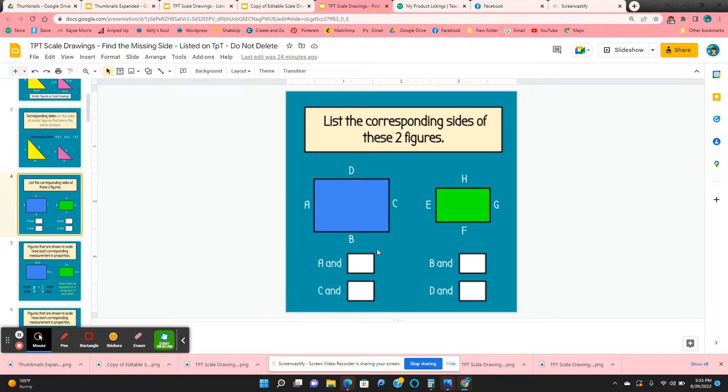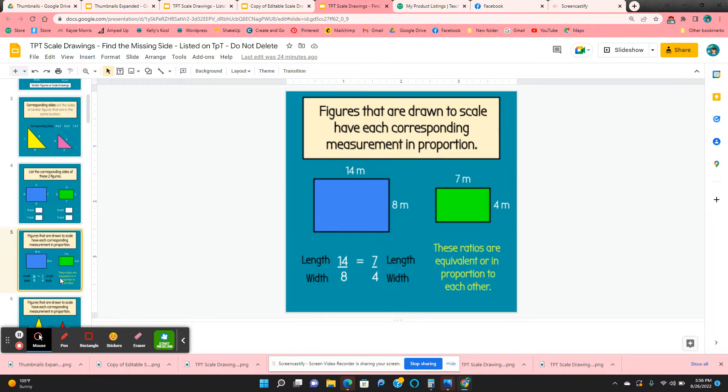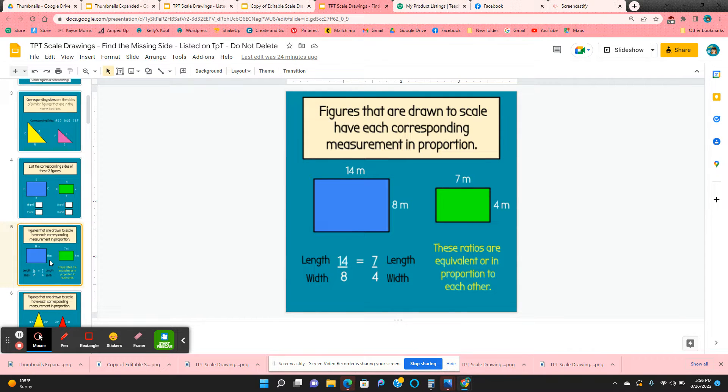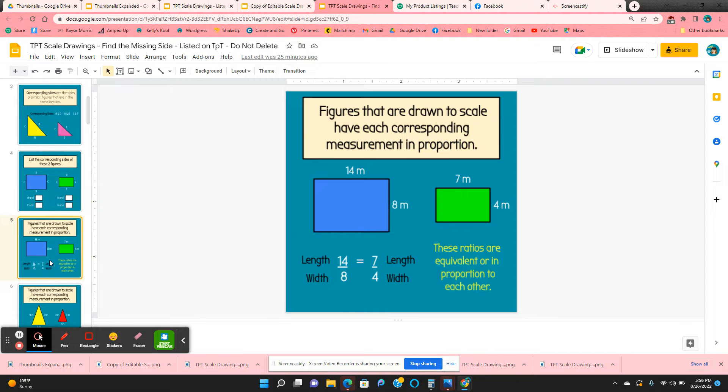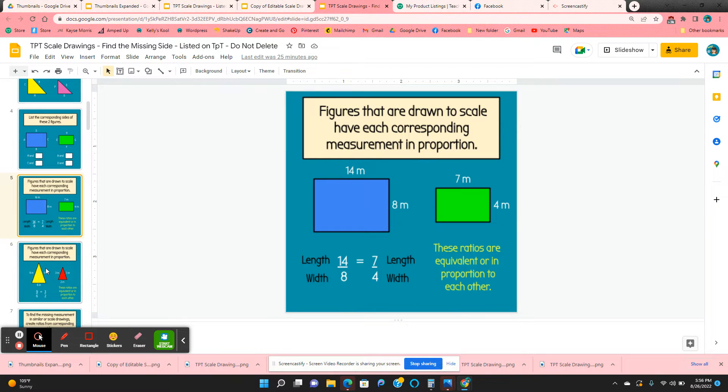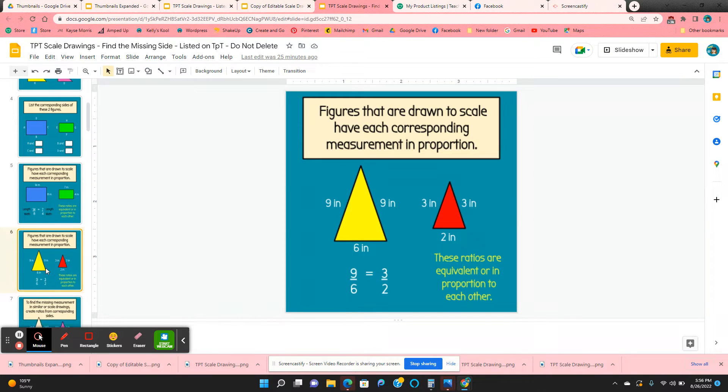They start out by recognizing which sides are corresponding, so A and E, B and F, and so on. Then there are a couple slides that show them how to create a ratio from the sides that are corresponding on rectangles and triangles.